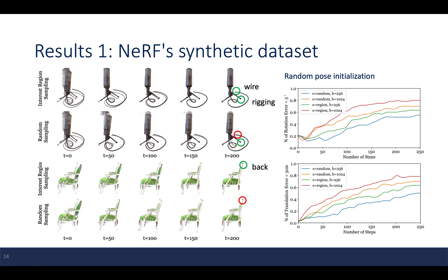The iNeRF model was tested on three different datasets. On the NeRF synthetic dataset, interest region sampling can align not only the view of the microphone but also the chair, while the random sampling method cannot. With random pose initializations, interest region sampling performs better than random sampling, and performance also improves with increasing batch size.